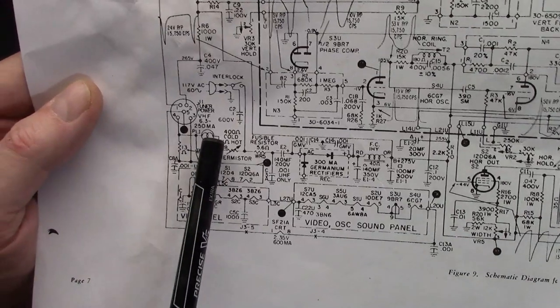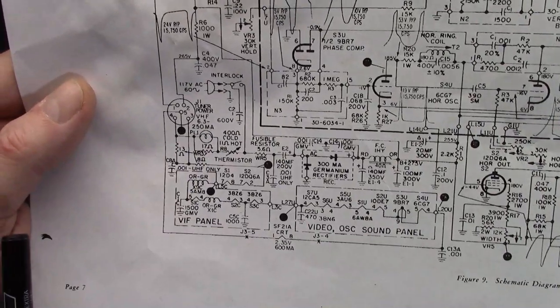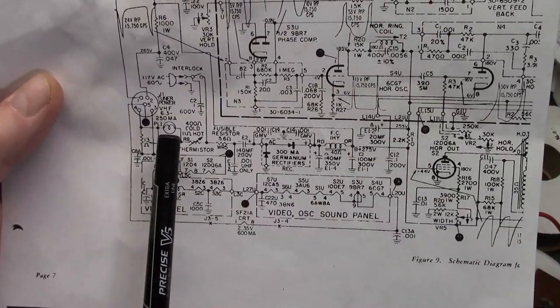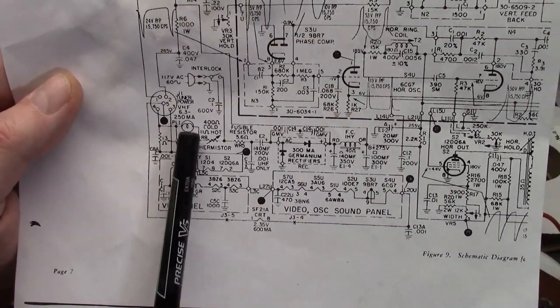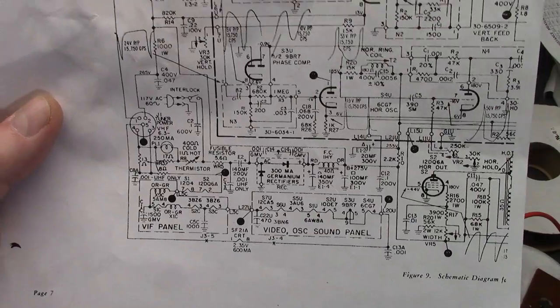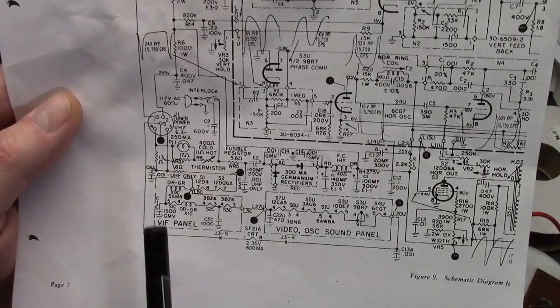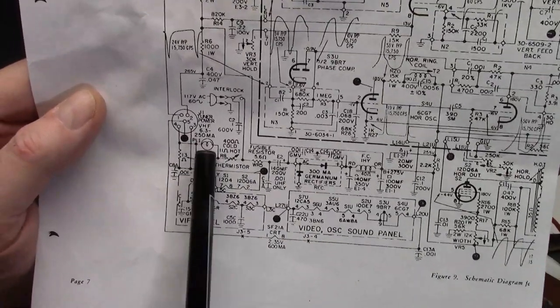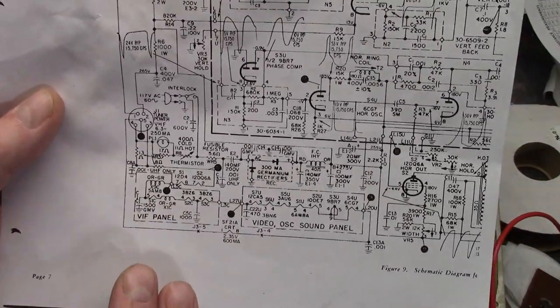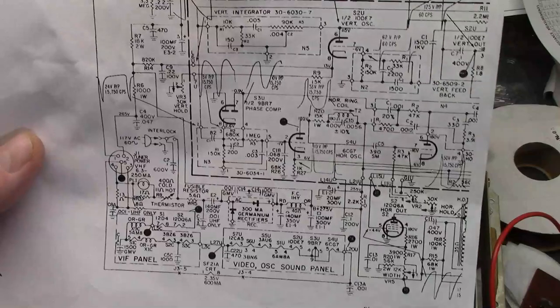To the left of that, we have this thing that says 6.3-250mA PL1, squiggle with a circle around it. That is that light bulb behind the channel selector. That means 6.3 volts, 250 milliamps. Those are specs for that light bulb. That is a type 44 light bulb. I often find type 47s in these, and it's not correct. It should be a type 44. Why does it matter? Because it's in parallel with the resistor, and the sum of these currents goes to the tube filaments.